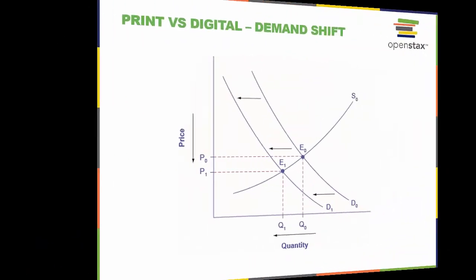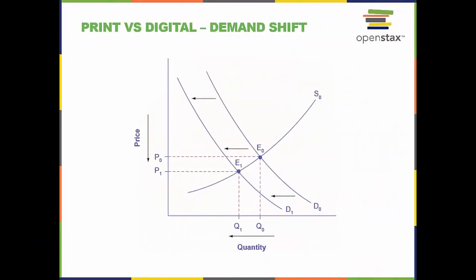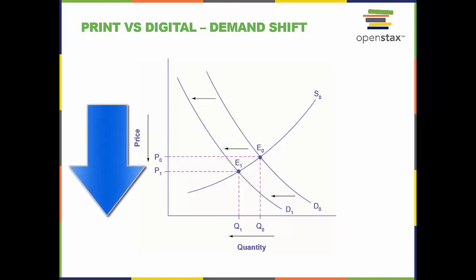Now let's look at a shift in demand. This demand shift is the result of a change in taste from print news sources to digital news sources, resulting in a leftward shift in demand for print news sources. If you go through the four-step process, you see that the result is a decrease in both equilibrium price and equilibrium quantity.